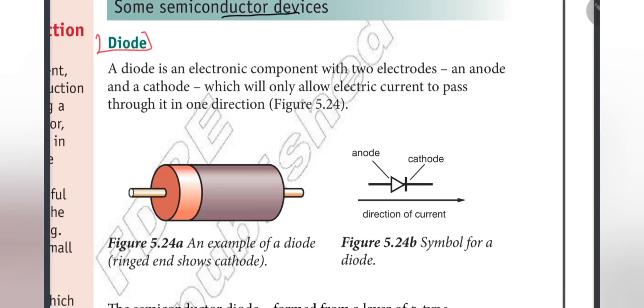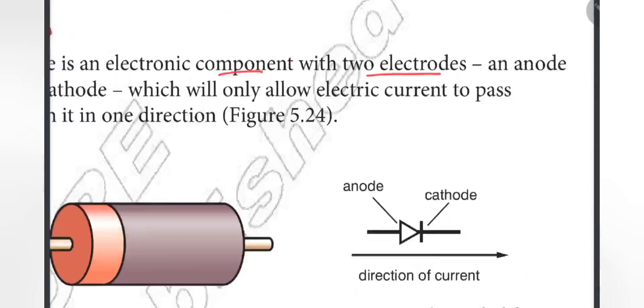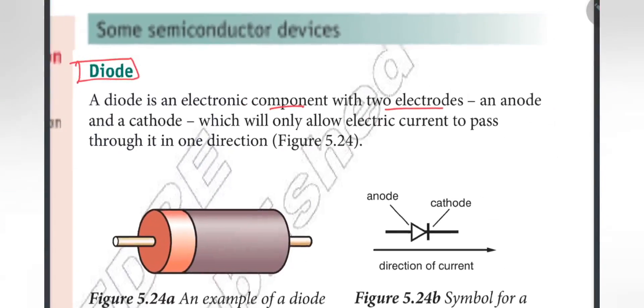Diode. Junction diode. A diode is an electronic component with two electrodes.